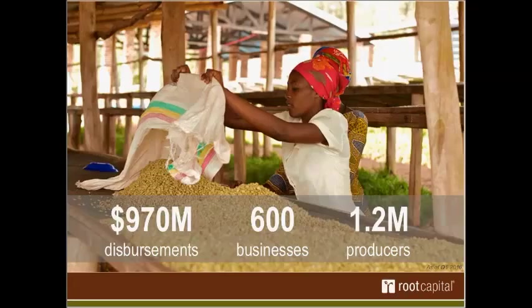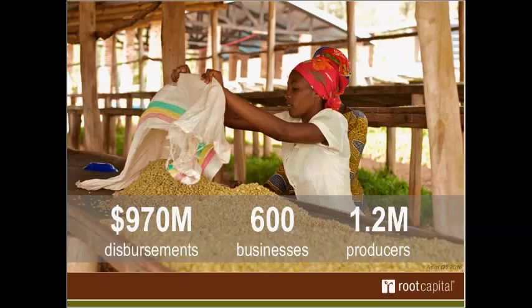While Root Capital doesn't provide direct financing to farmers — instead lending through producer organizations and SMEs — many of our clients do on-lend to their affiliated farmer suppliers through some type of internal credit fund. It's through those businesses, those smallholder aggregators, that we're able to reach over a million smallholder farmers every year.